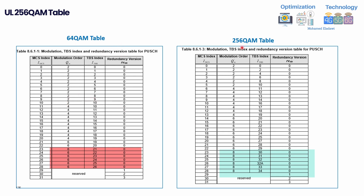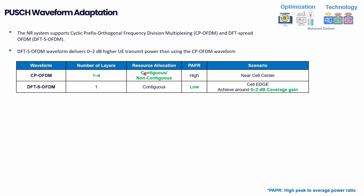This is the 3GPP table for comparison between 64 QAM and 256 QAM. MCS indices from 23 to 28 were transmitting 6 bits per symbol under 64 QAM. That range has now been replaced by 256 QAM which uses 8 bits per symbol. This table should be delivered via the RRC configuration message to the UE.